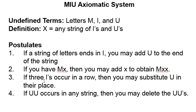In general, an axiomatic system is a system that consists of three things: undefined terms, definitions — items defined in terms of the undefined terms — and postulates. A postulate and an axiom are one and the same. An axiom or postulate is a set of statements that we're going to assume are true about the undefined terms and the definitions. They don't need to be proven to be true; they're just things we're going to assume are true.